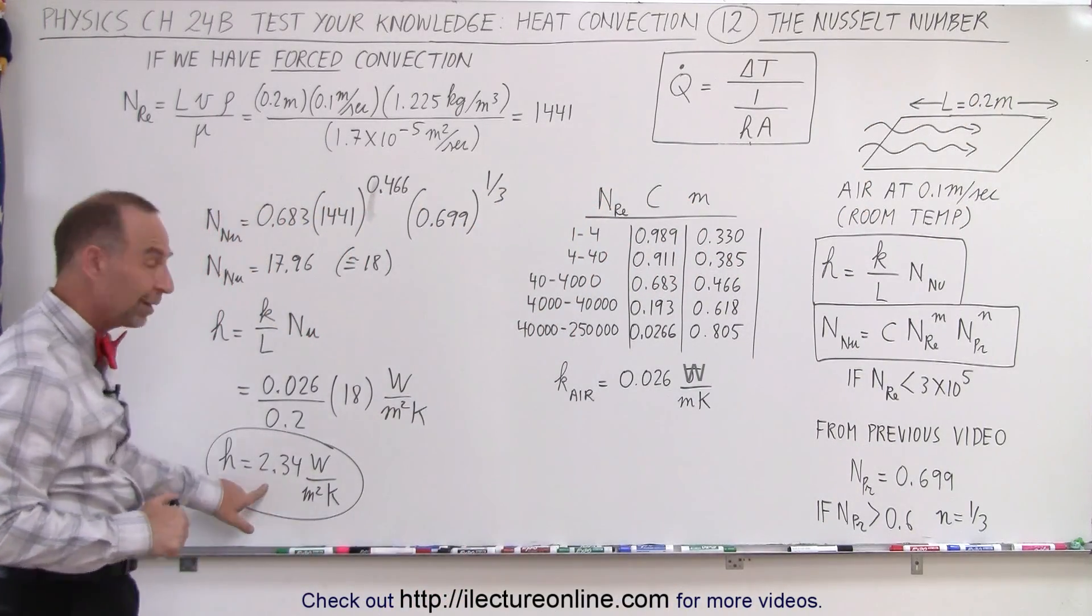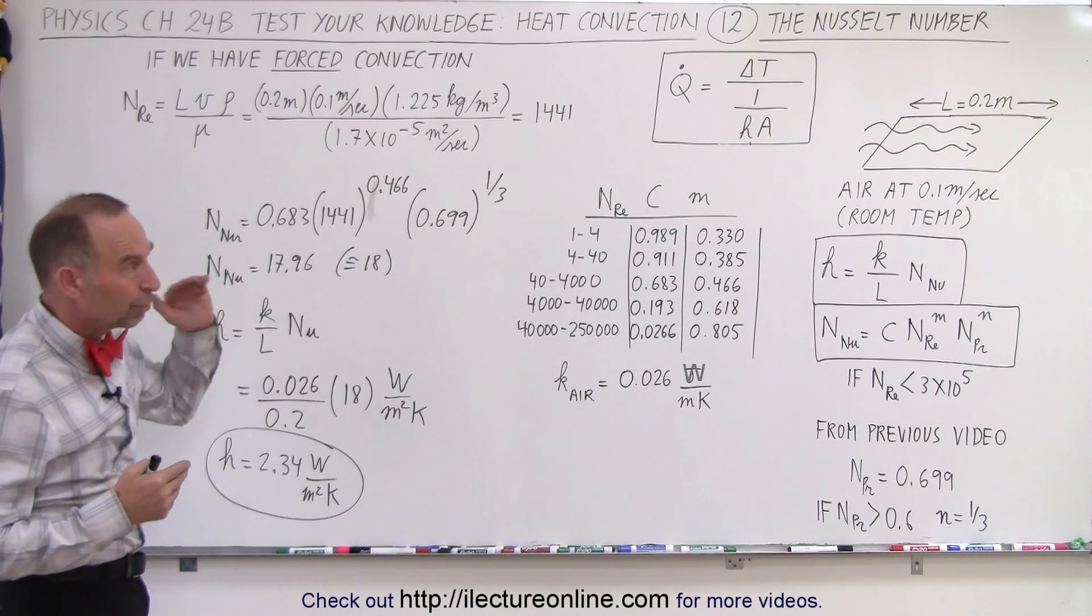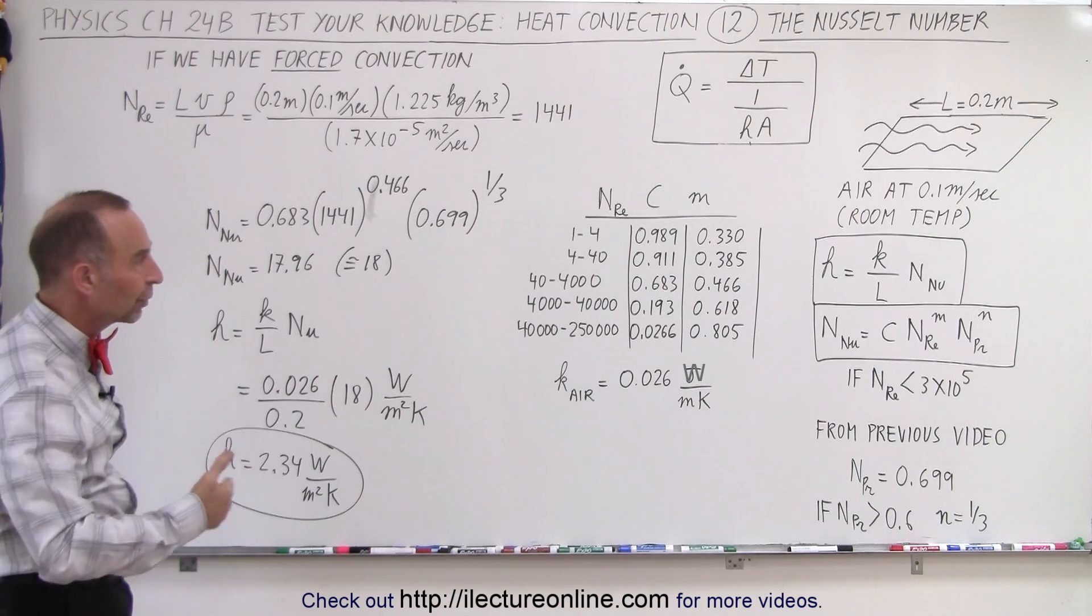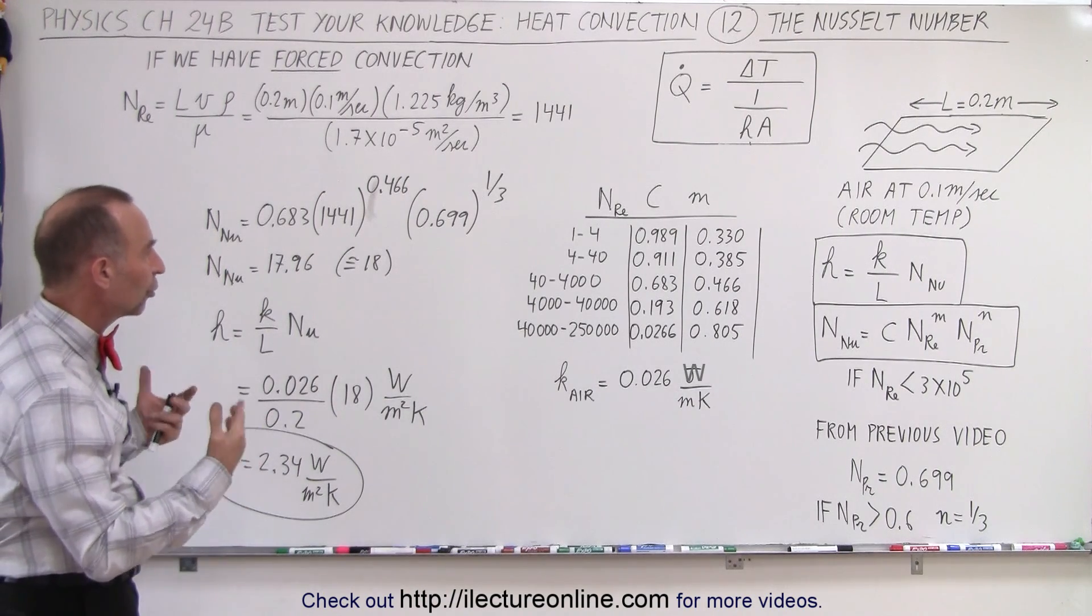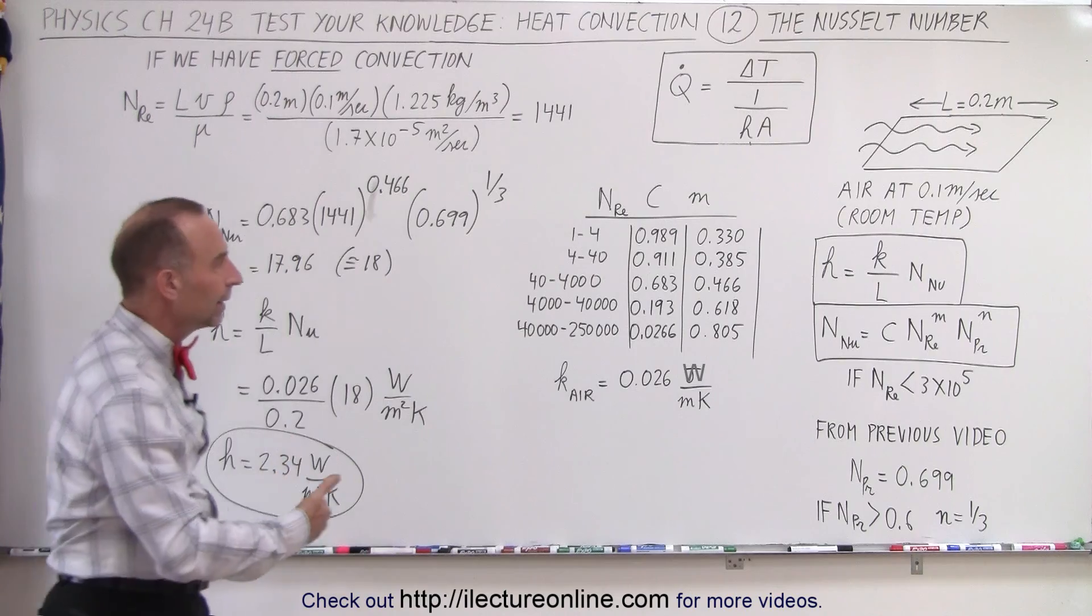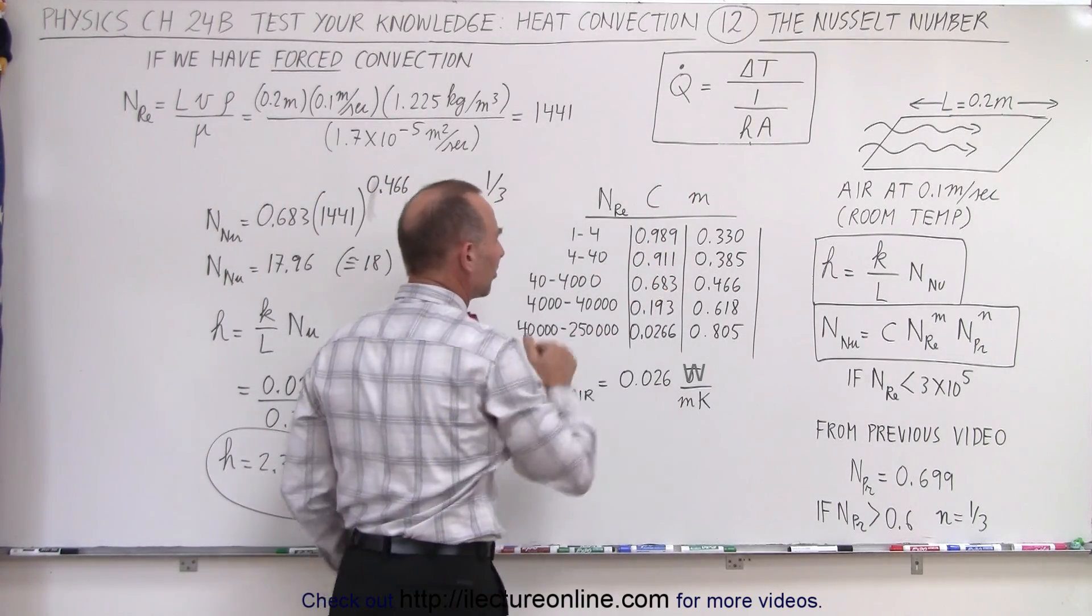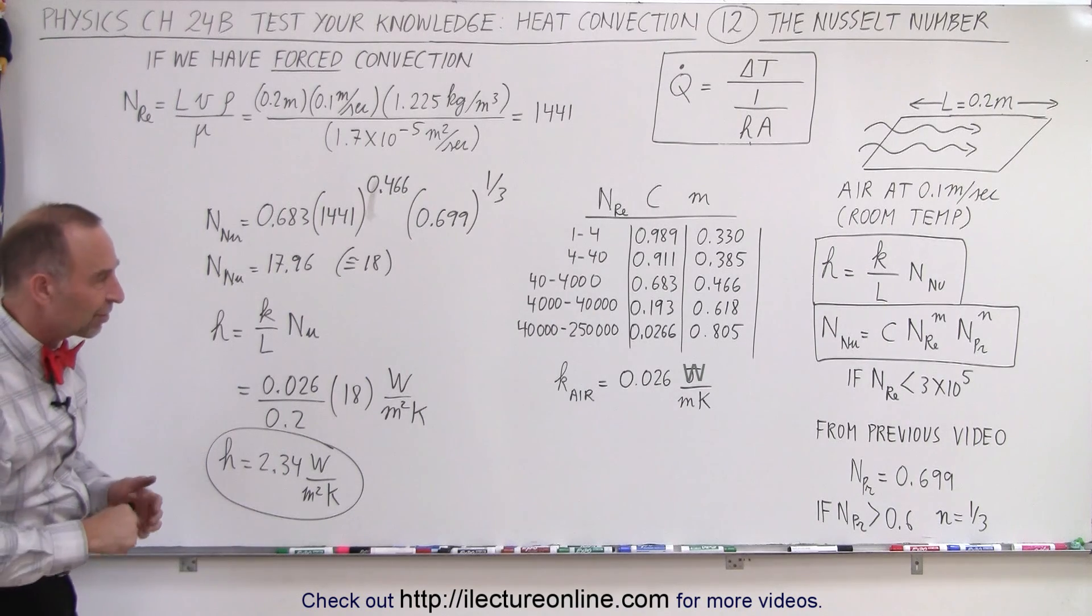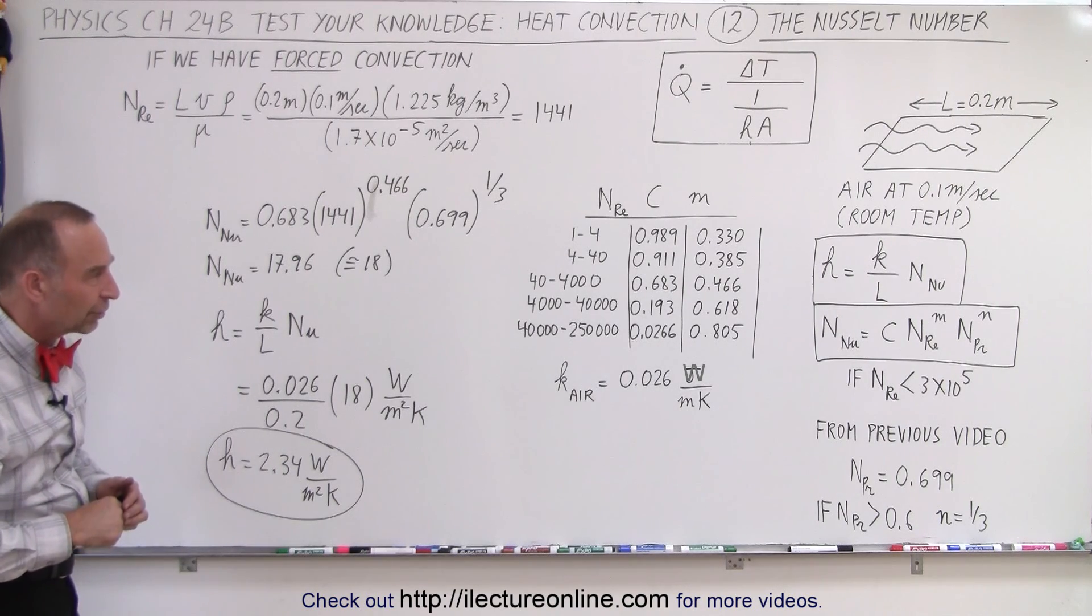Now, of course, the number is relatively small because the airflow is only at 0.1 meter per second. Notice that if the airflow gets larger, we get a larger Reynolds number. Then the exponent goes up, the Reynolds number goes down, we get a slightly different value for that, but we'll show you some examples in the future of how to do that as well.